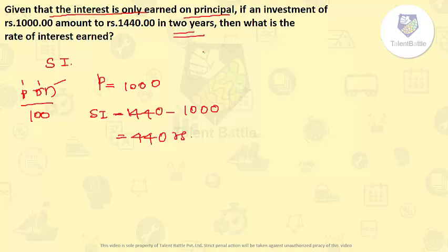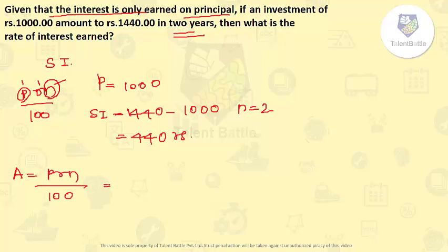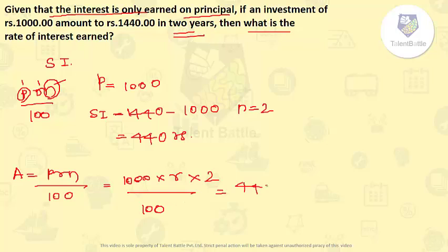We have the principal, number of years, and simple interest. Substituting into the formula: 440 = (1000 × R × 2) upon 100. Solving this equation gives us 20R equals 440.